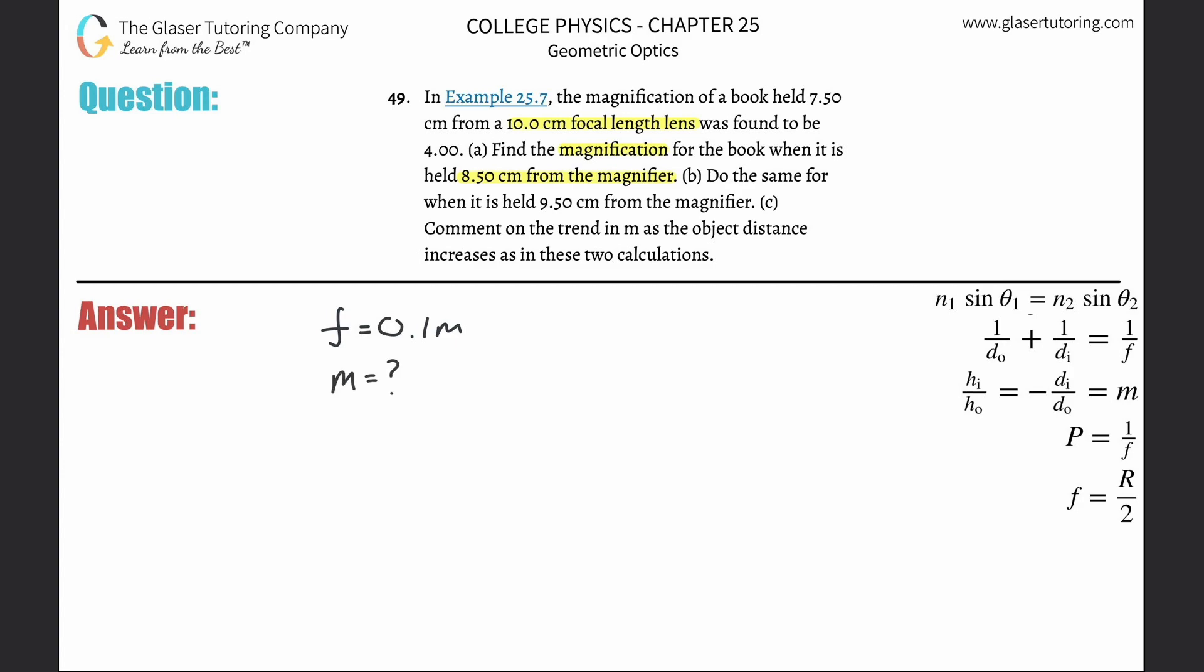It's saying that the book now, the object, is held 8.5 centimeters from the magnifier. So the object distance is going to be 0.085 meters.